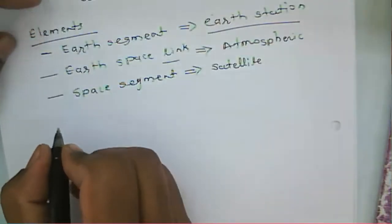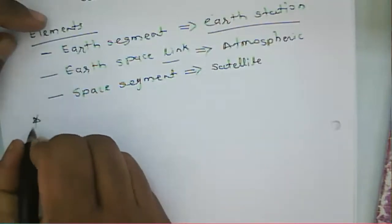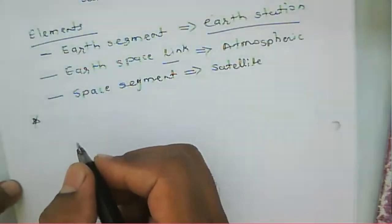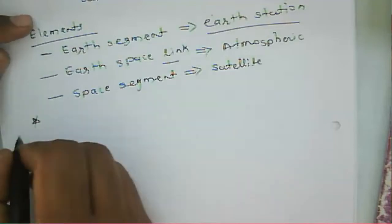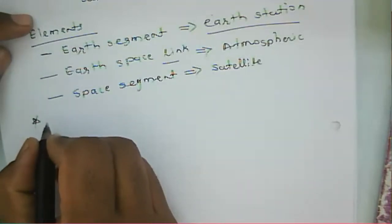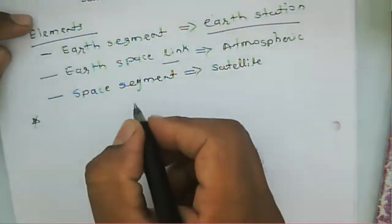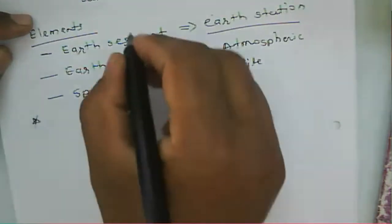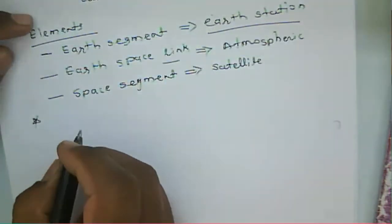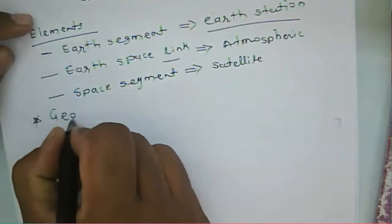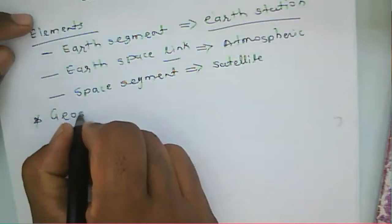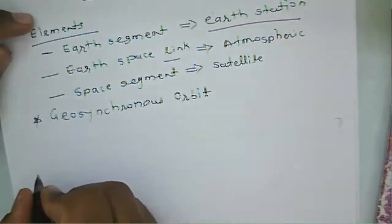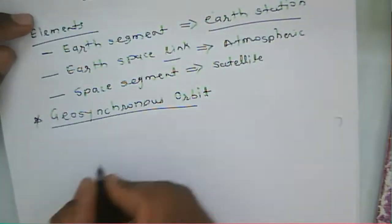To understand the satellite subsystem component, we should consider a specific orbit. A geostationary satellite is fixed relative to the earth station — it transmits a signal for a particular fixed station. That's why we consider the geostationary satellite or geosynchronous orbit. We learn the satellite subsystem component using the geosynchronous orbit and a geostationary satellite.